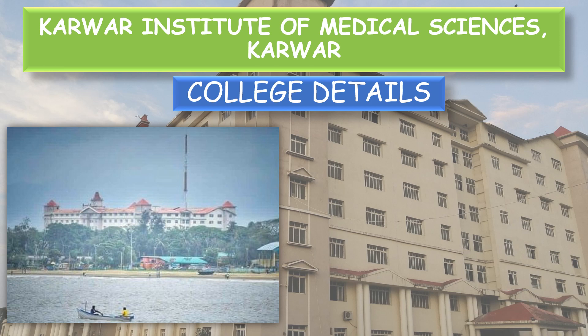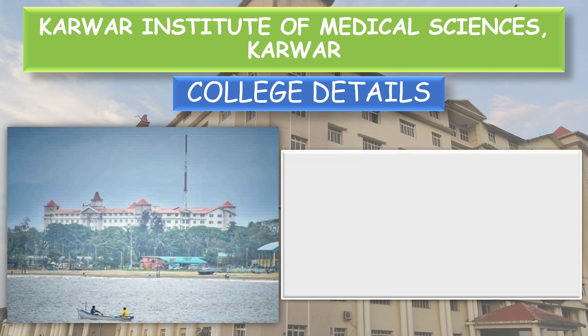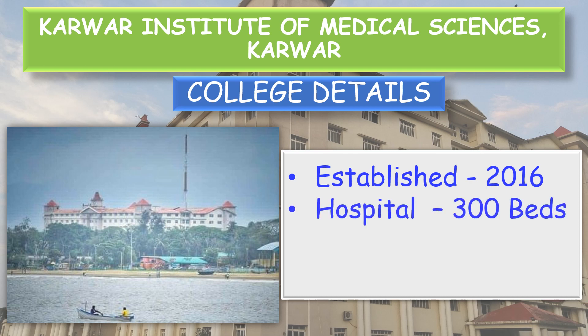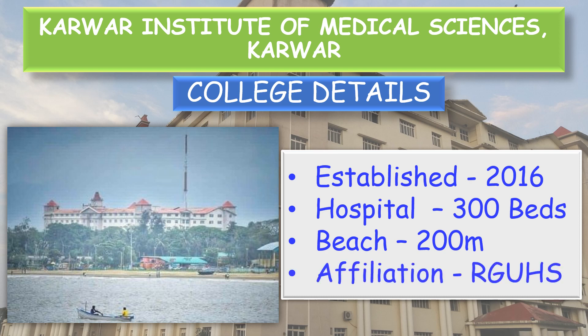Now, first of all, coming to the college details. This college was established in 2016. The hospital has 300 beds and the special feature is beaches 200 meters from the college, which is clearly visible in the picture. And the affiliation is RGUHS — Rajiv Gandhi University of Health Sciences, Bangalore.